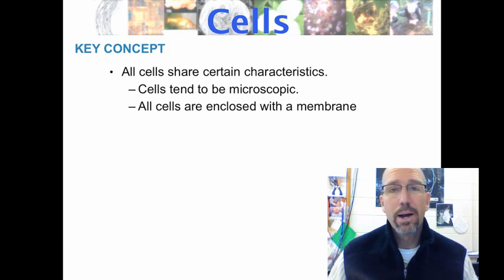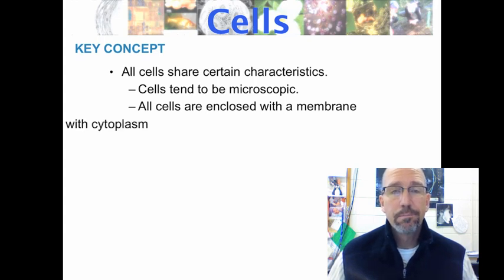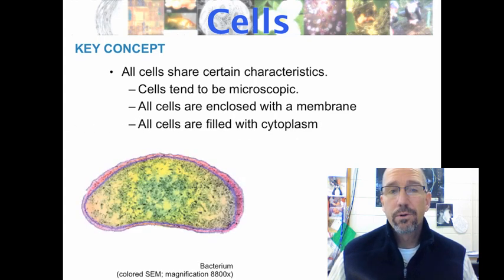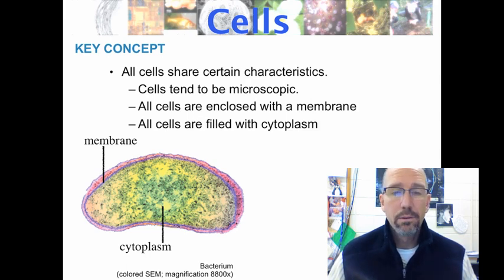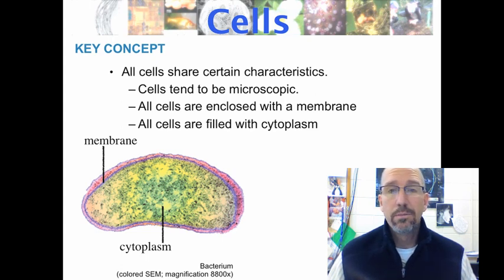All cells are enclosed with a membrane — they're surrounded by a barrier to keep them isolated from the environment. And all cells are filled with cytoplasm, where a lot of the chemistry of cells happens. Here's a picture of a bacterium, surrounded by a membrane and filled with cytoplasm — that's the filling in the middle of the cells.